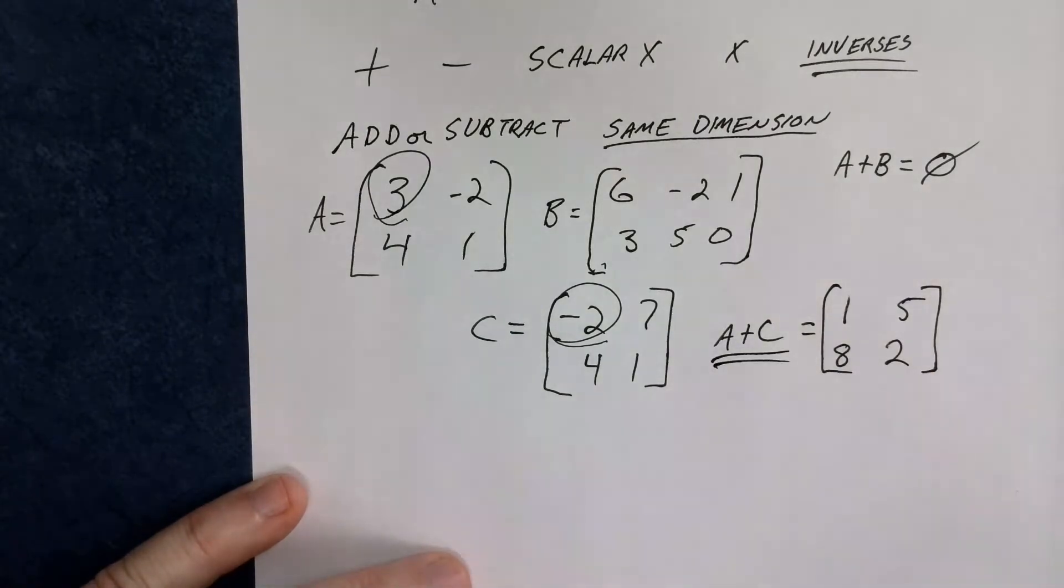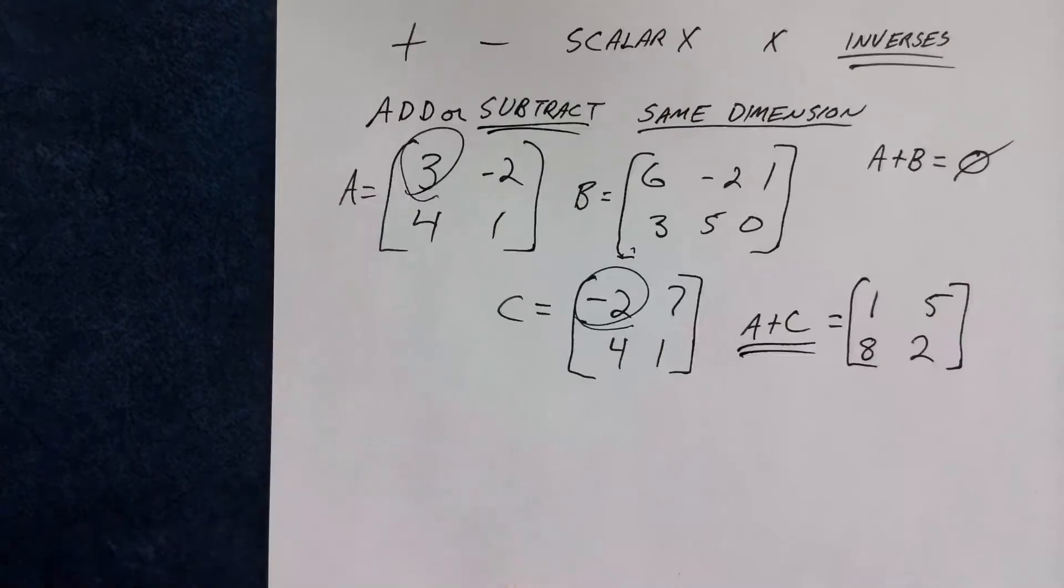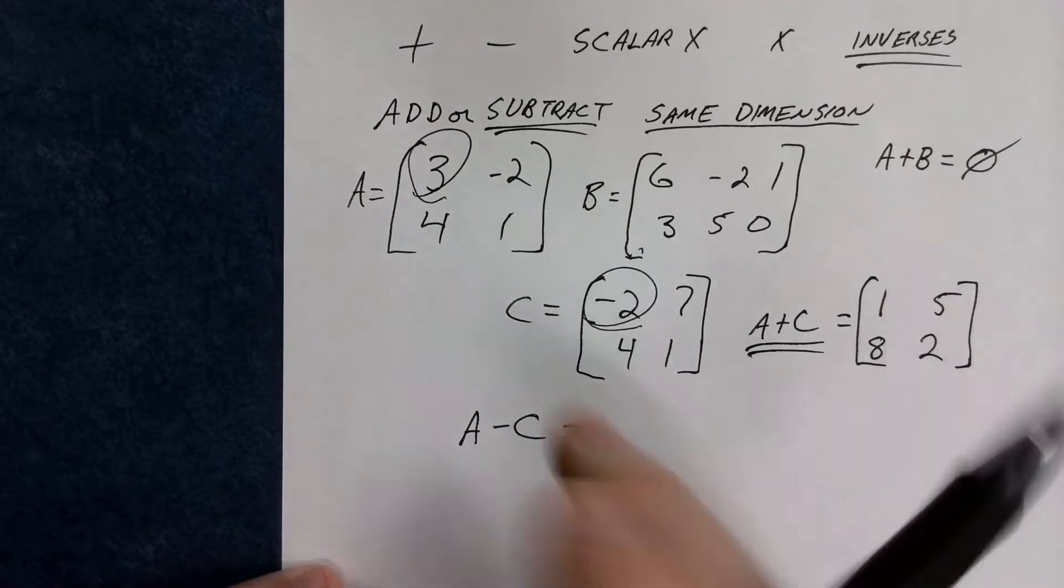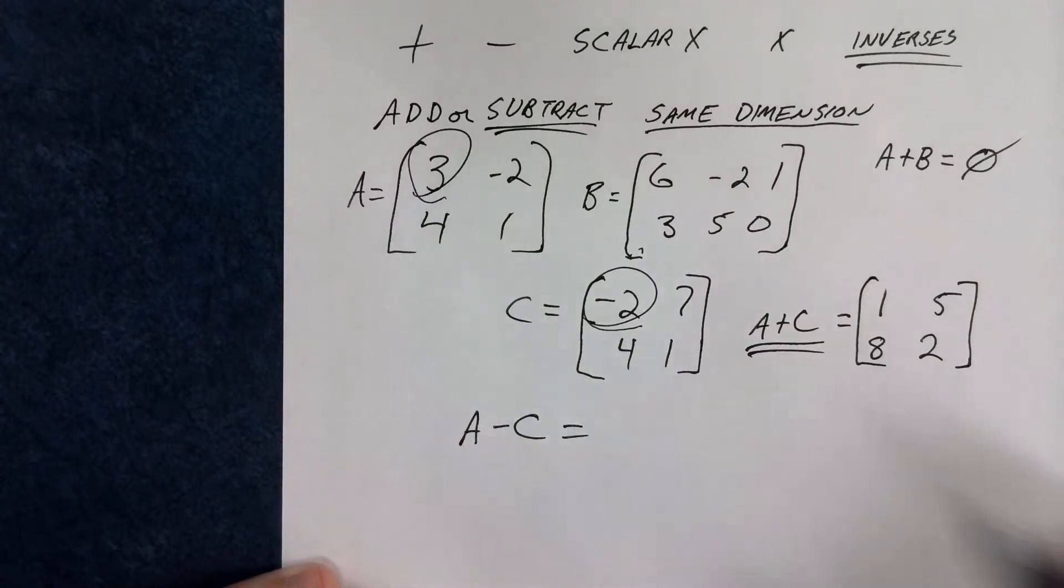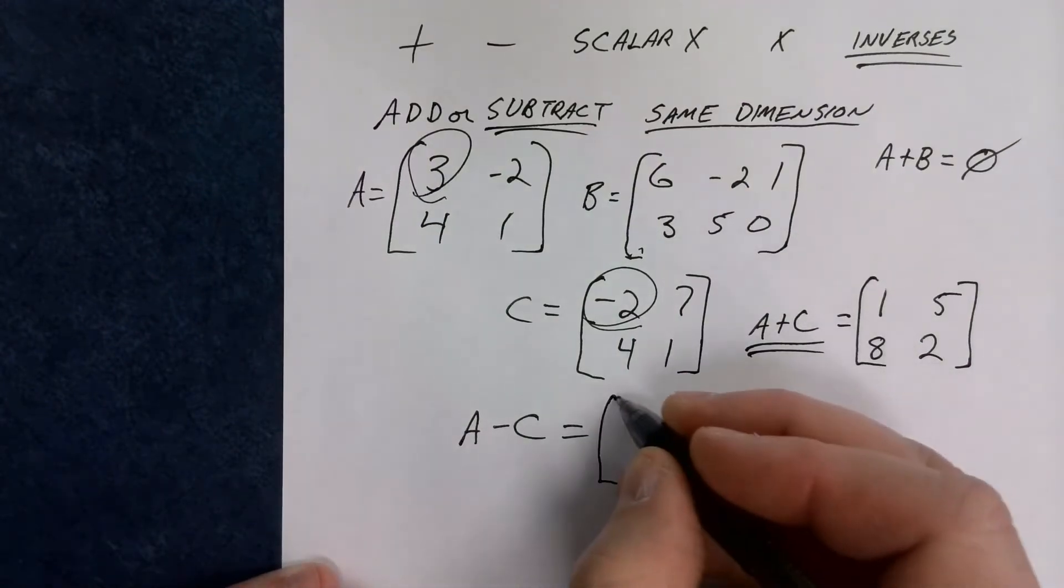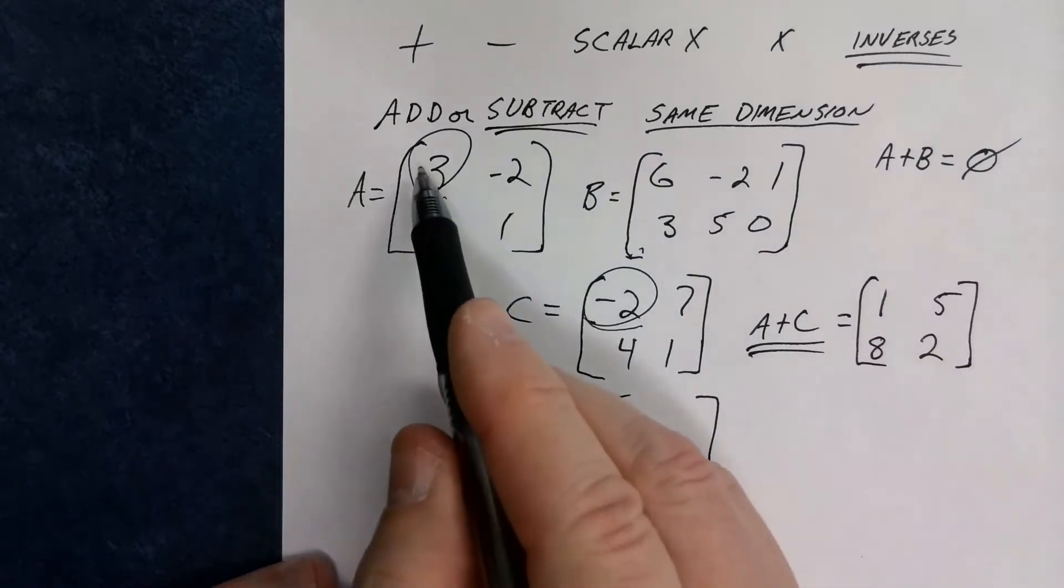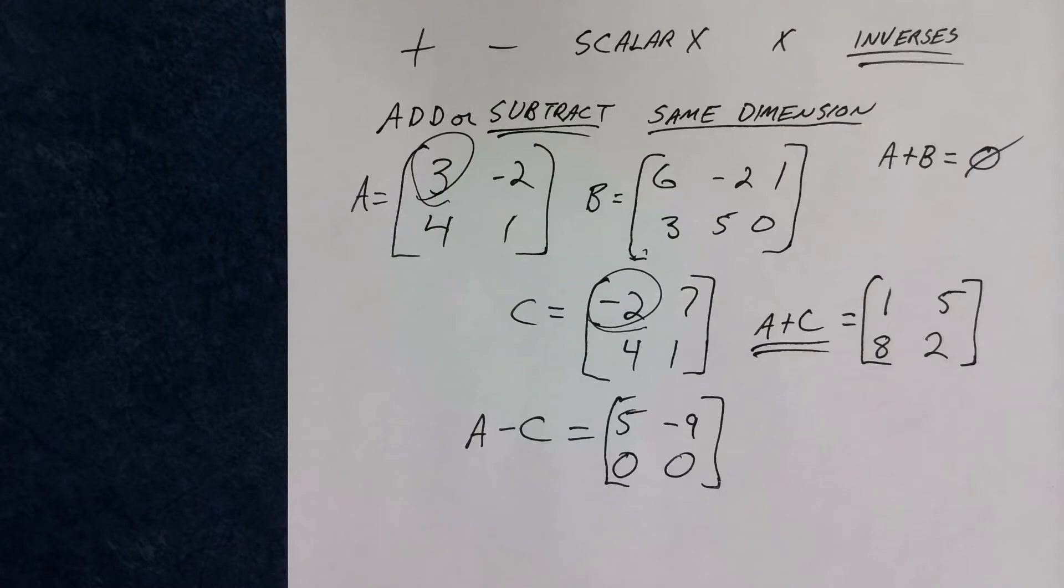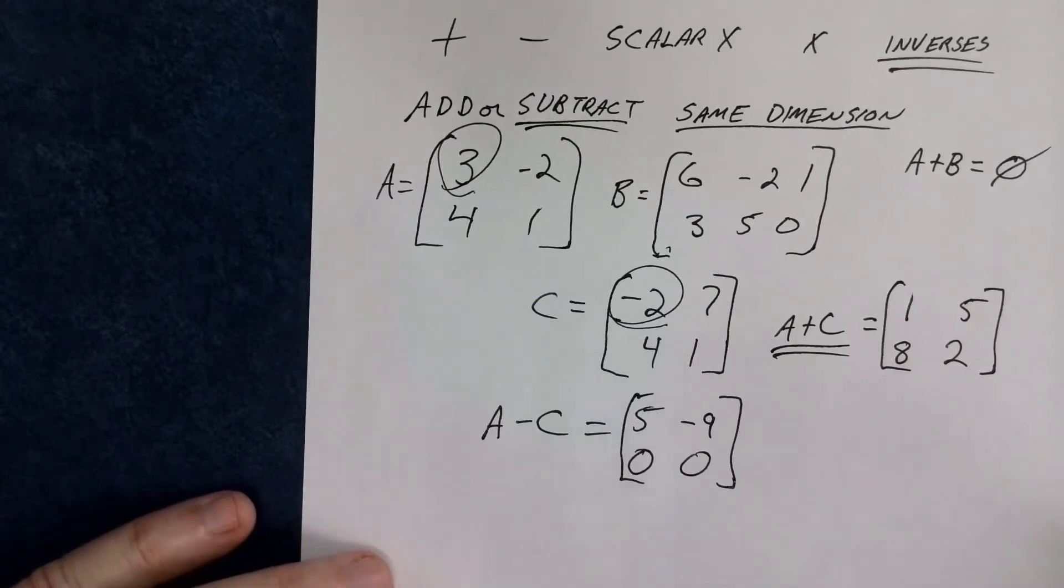Now, if that works for addition, it also works for subtraction. So you just have to subtract each of those terms. So if I did A minus C, I said, what does that equal? We know that we can do it again, because it's a 2 by 2 and a 2 by 2. And, of course, the answer is going to be a 2 by 2. So 3 minus negative 2, that's 5. Negative 2 minus 7, that's negative 9. 4 minus 4 is 0. And 1 minus 1 is also 0. So A minus C: 5, negative 9, 0, 0, is the 2 by 2 matrix that results from that subtraction.